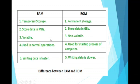Volatile means that data can change suddenly. For example, if we open any application and start doing work, and suddenly power is lost, then our data is also lost. This is the feature of RAM.